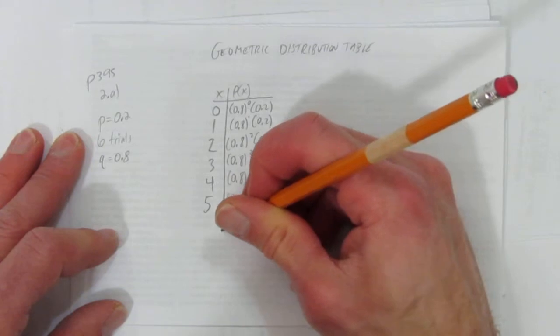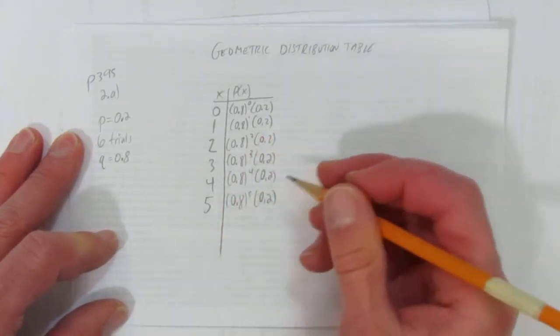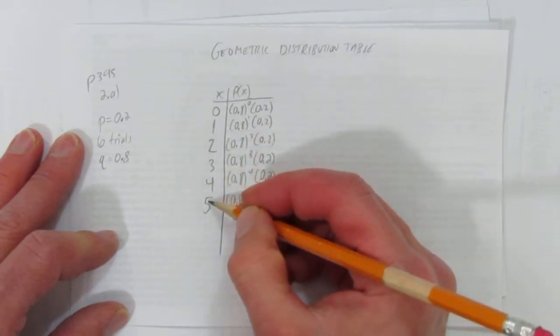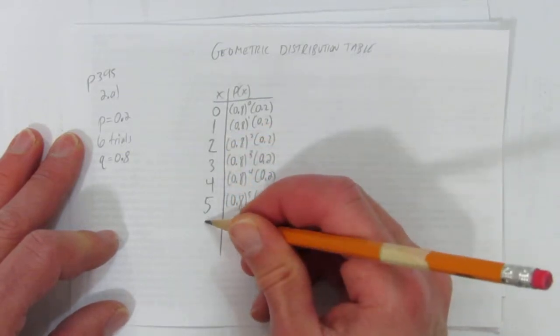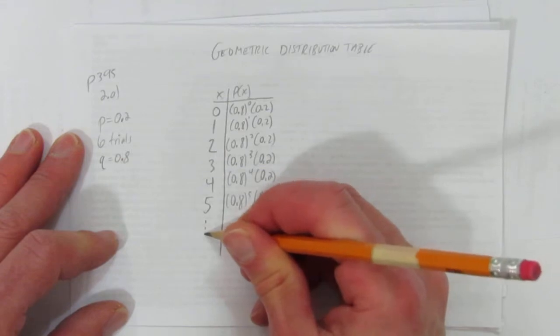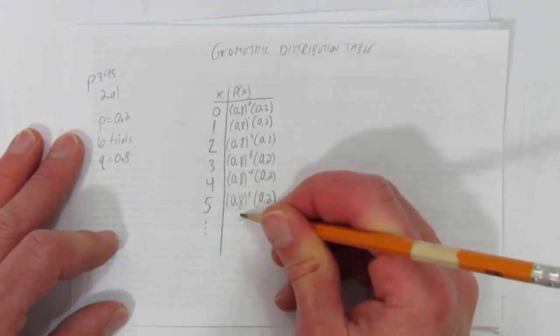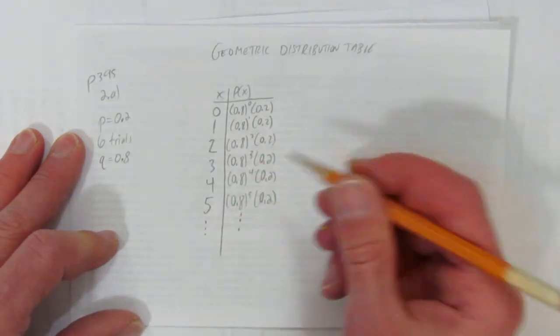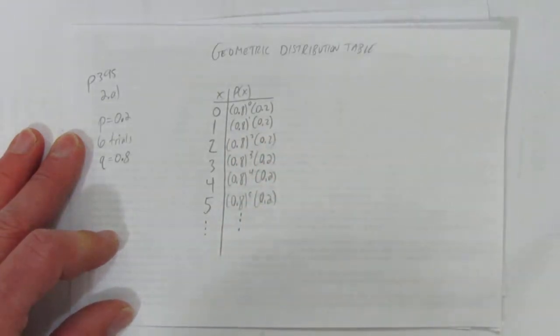Now, note, unlike binomial distribution tables, a geometric distribution table won't add up to 100%. That's because you could theoretically fail an infinite number of times. So we should put some sort of dot dot dot to show technically this table goes on. But we're asked only to show for 6 trials, as in 5 possible failures.